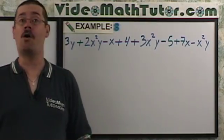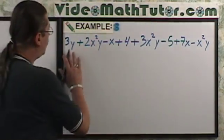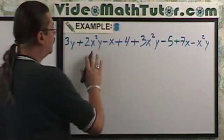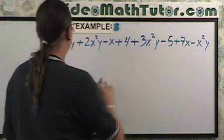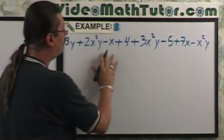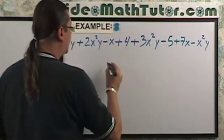Now, let's identify all the like terms in the following algebraic expression. So, with the 3y, there's nothing else that just has a y. Here's a y that's with an x squared. So, nope. No like terms there. How about here? 2x squared y, 3x squared y. And there's one at the end. So, those are like terms.